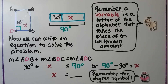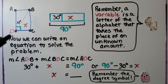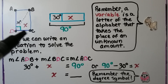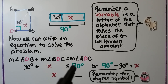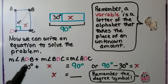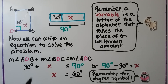We can write an equation to solve the problem. The measure of angle ADB plus the measure of angle BDC equals the entire angle ADC. We know the measure of angle ADB is 30 degrees. If we add x, the unknown amount, it should equal 90 degrees. We can also use subtraction: 90 degrees minus 30 degrees equals x. 90 degrees minus 30 degrees is equal to 60 degrees, so x equals 60 degrees. The measure of angle BDC is equal to 60 degrees.